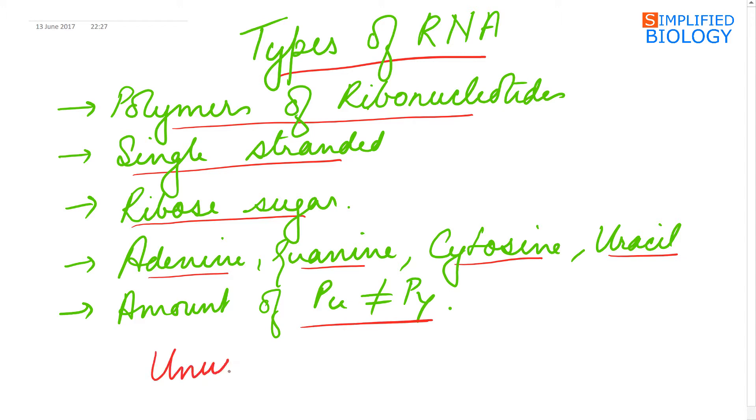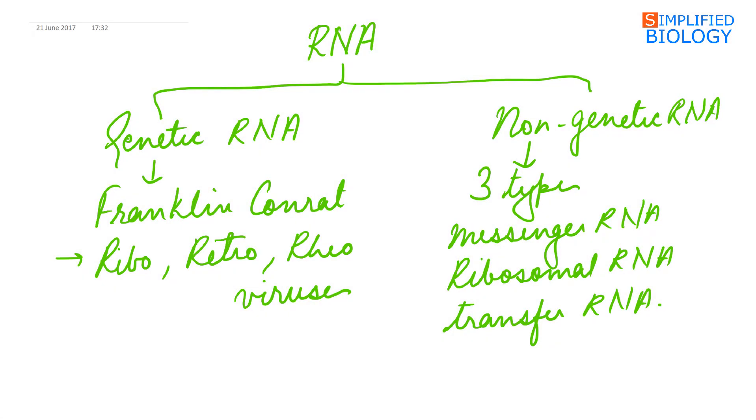Unusual bases may be present like inosine or pseudouridine. RNA can be divided into two types: genetic RNA and non-genetic RNA. Genetic RNA was discovered by Franklin Conrad. It is found present in ribo-, retro-, and reo-virus. In reo-virus, it is double-stranded.